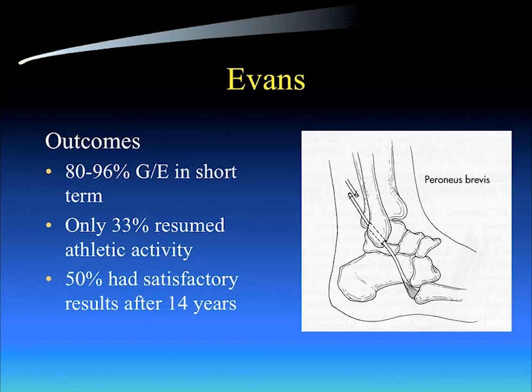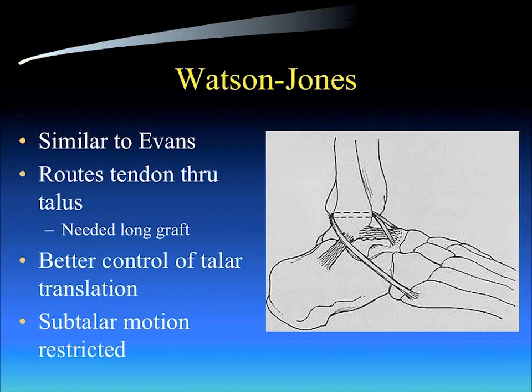You'll see in the diagrams that they brought the peroneus brevis through the back of the fibula to the front and sutured it there. In another variation, it's basically a tunnel directly in the front of the fibula, exiting posteriorly about two centimeters more proximal. That's the Evans procedure — it sacrificed the entire peroneus brevis and created a tenodesis effect on the lateral aspect of the ankle.